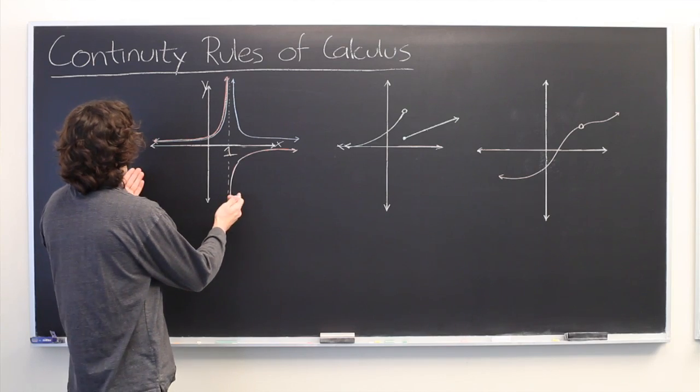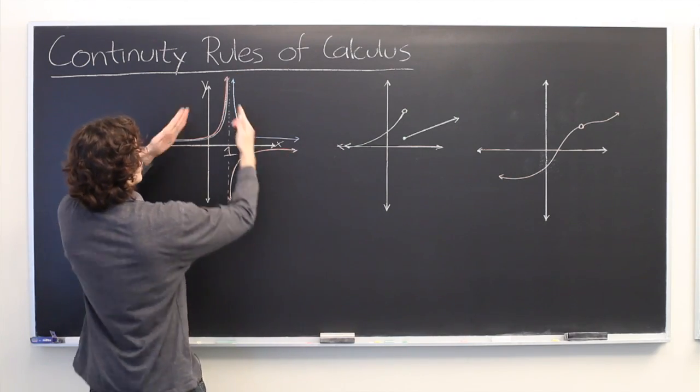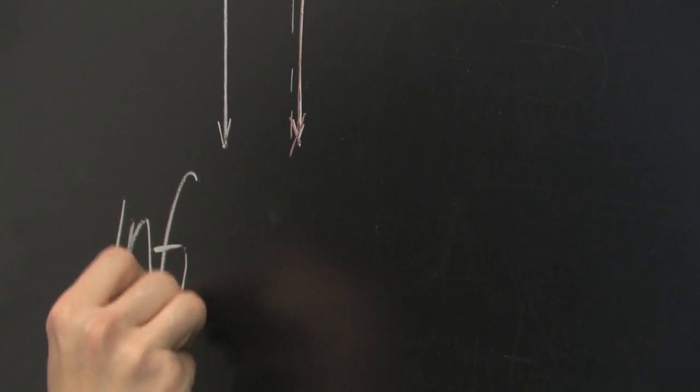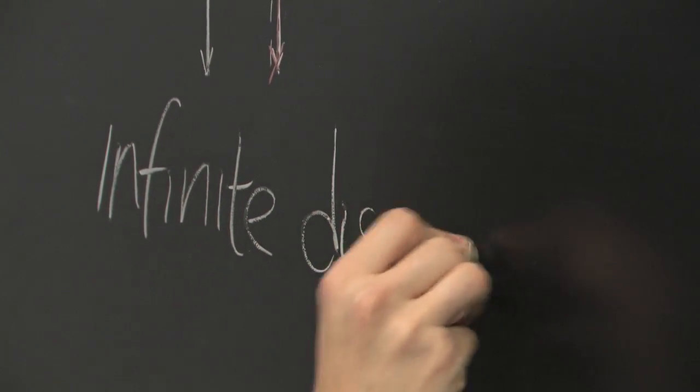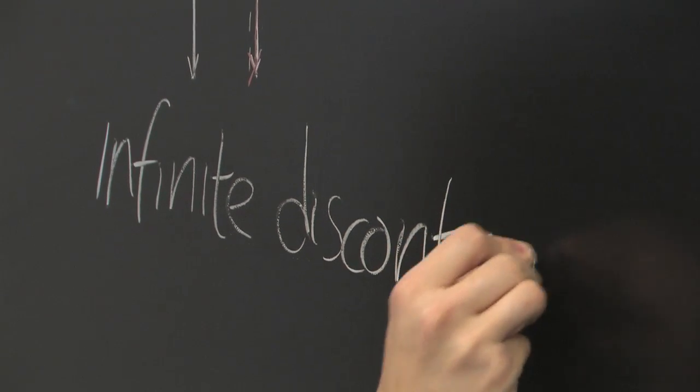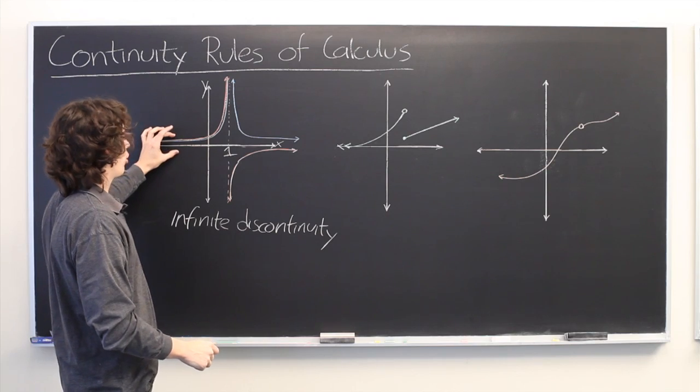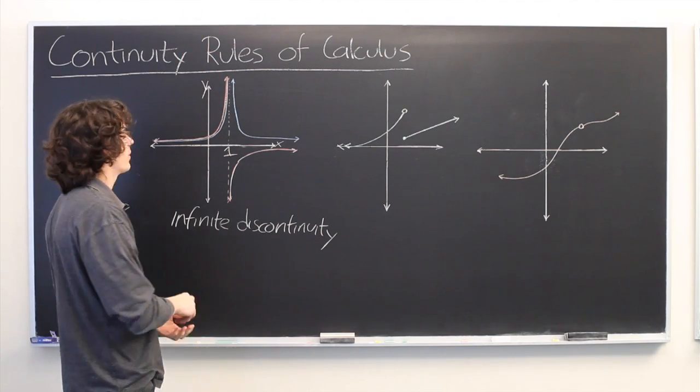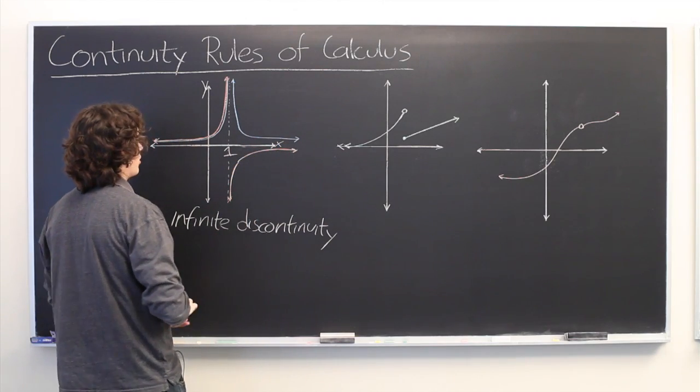So here we have two functions, a red function and a blue function, which both feature an infinite discontinuity at x equals 1. So in the case of our red curve, as we approach x equals 1 from the left, the function goes up towards positive infinity. As we approach x equals 1 from the right, the function goes down to negative infinity.